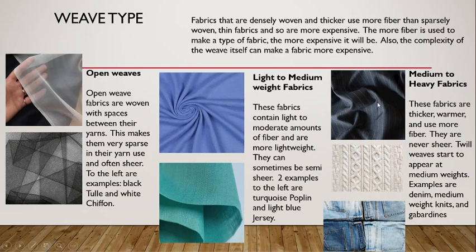Medium-to-heavy weight fabrics are usually thicker, warmer, and use more fiber. They are usually never sheer. Twill weaves start to appear at medium weights. Twill weaves are not plain weaves — instead of over-under-over-under, the filler yarns go over two, under one, over two, under one, and then stagger as they go. This creates a diagonal ribbing pattern on the surface of the fabric, which you can see in denim if you look closely. Twill is the strongest of our weaves, and because of its durability is usually a little bit thicker, which is why we begin to see twills at medium weight and above.